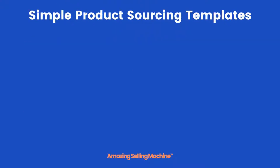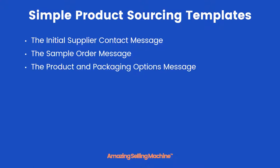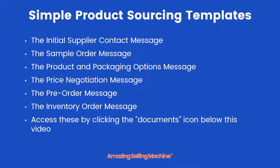Let's quickly go over the different sourcing templates we've already created that you can use. We have the initial supplier contact message, the sample order message, the product and packaging options message, the price negotiation message, the pre-order message, and the inventory order message. You can access all of these by clicking on the documents icon below this video — they're zipped into one single PDF file. Simply cut and paste the part you want into your own message, then insert your personal details such as your name, company name, the supplier you're communicating with, and the product.